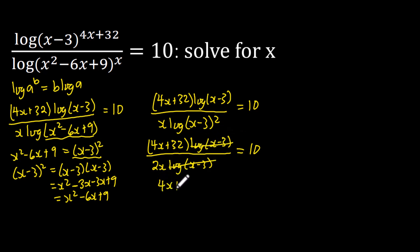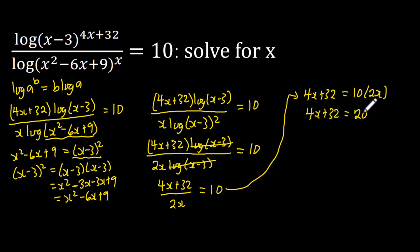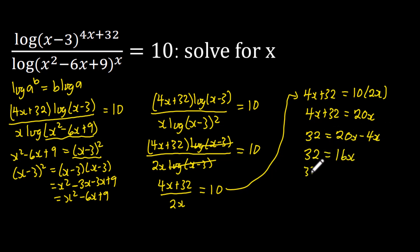We are left with (4x + 32) divided by 2x = 10. Cross-multiplying gives 4x + 32 = 10 × 2x, which is 4x + 32 = 20x. Grouping like terms: 32 = 20x - 4x, so 32 = 16x. Dividing both sides by 16, we get x = 2.